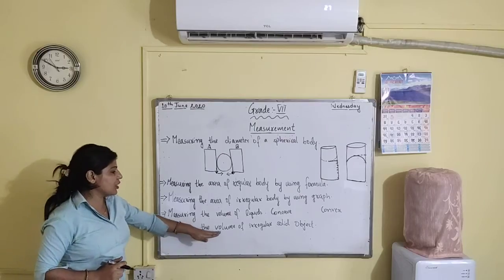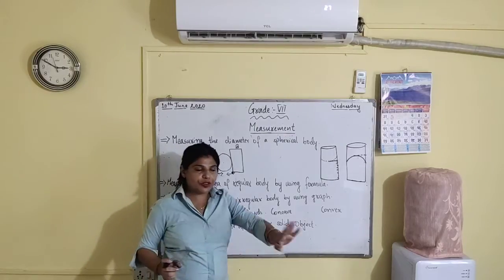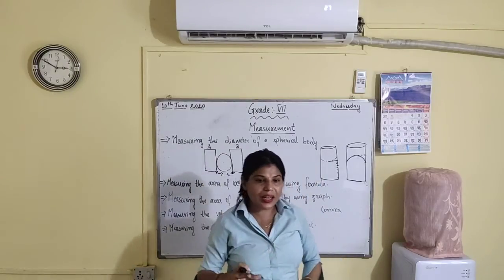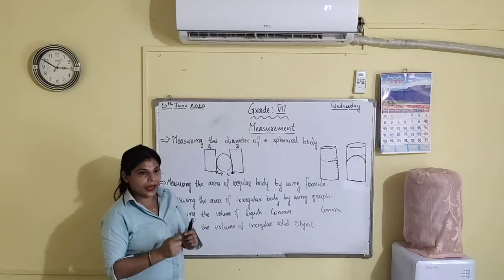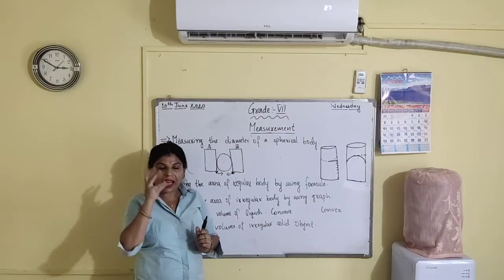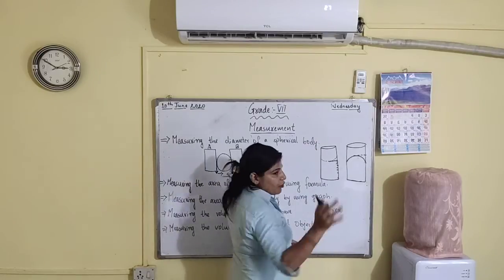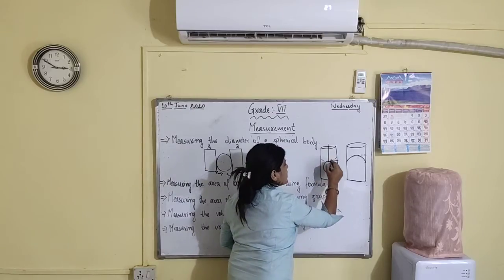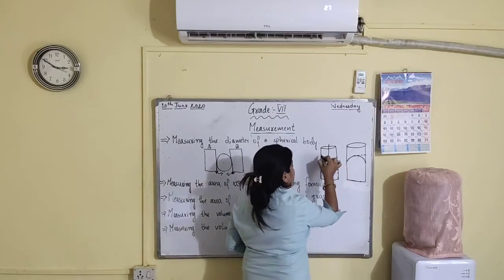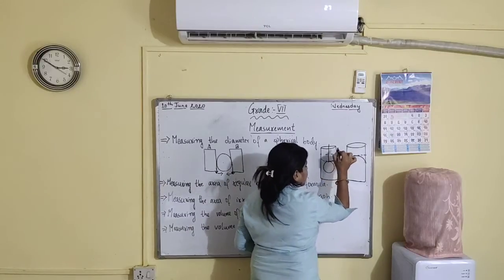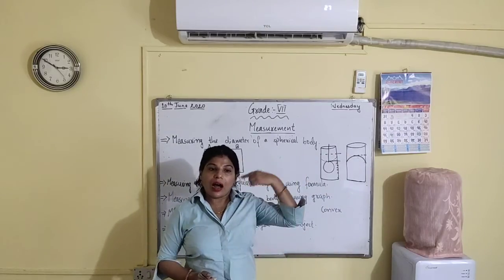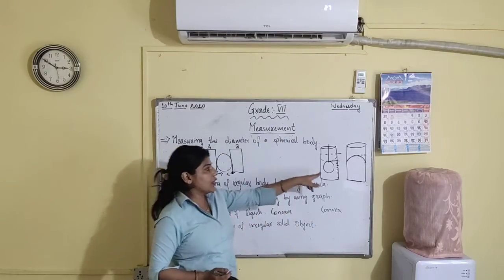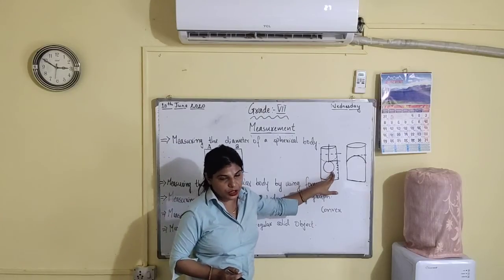Now comes measuring the volume of an irregular solid object. Take a beaker or measuring cylinder and put some water in it. Note the initial level of the water. Now, tie the object with the help of a thread and insert it into the water. The water level will obviously increase. Measure the increased water level and subtract the initial level from the new level. This will give you the volume of the solid object.